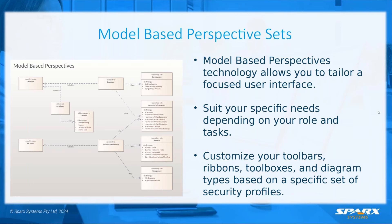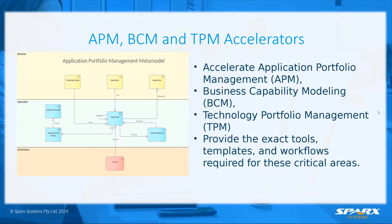Model based perspectives technology allows you to tailor your user interface. You can specify what ribbons are available, what technology is available, and design Enterprise Architect to suit your specific needs depending on your role and the tasks you perform. You can customize your toolbox, ribbons, and diagram types. There are accelerators for application portfolio management, business capability modeling and technology portfolio management, providing the exact tools, templates and workflows required for all these critical areas.